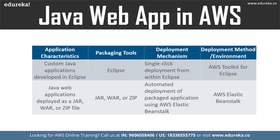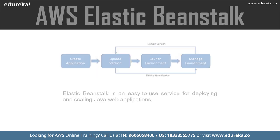AWS offers several tools and services to enable both AWS-managed and customer-managed Java application deployment. As you can see on the screen, there is a table showing a high-level reference to help identify the most appropriate option for a specific scenario. For example, if you have a custom Java application developed in Eclipse, the deployment mechanism is single-click deployment from within Eclipse using the AWS Toolkit for Eclipse. If you have a Java web application deployed as a JAR, WAR, or ZIP file, the mechanism is automated deployment using AWS Elastic Beanstalk.